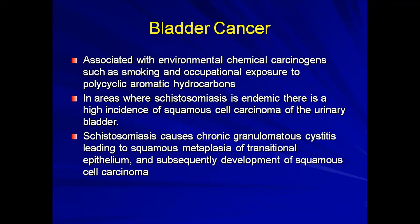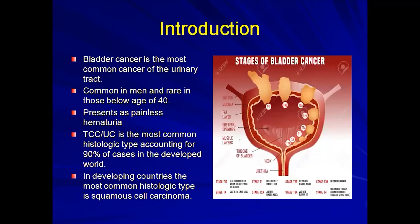In areas where schistosomiasis is endemic, disease progression occurs because of the chronic granulomatous inflammation, which leads to urinary bladder fibrosis, stasis of urine, and bacterial superinfection. The bacteria formed are responsible for conversion of nitrates into nitrosamines, which are carcinogenic and act on the metaplastic epithelium, subsequently leading to progression to squamous cell carcinoma. As the disease progresses, it involves the ureteral openings, causing chronic obstruction and renal impairment.